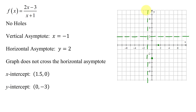Now remember, graphs can never cross vertical asymptotes, and in this case the graph does not cross the horizontal asymptote. Looking at the region to the right of my vertical asymptote, I have two points here. The graph is going to approach the vertical asymptote going down, come up through my intercepts, and then approach the horizontal asymptote as x gets bigger and bigger. To the left of the vertical asymptote, the graph could not come up, cross the x-axis, and approach the horizontal asymptote from that direction, because that would require an extra x-intercept — and we only found one intercept in the other region.